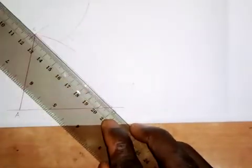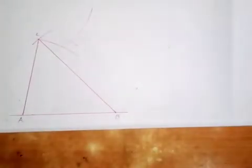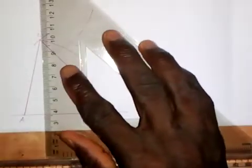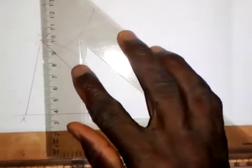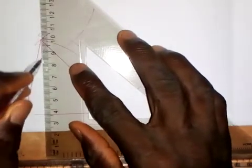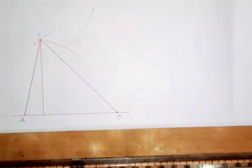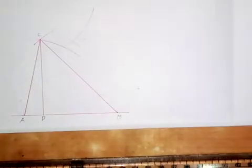The next step is to draw a perpendicular line to AB. Using my set square, I bring it to point C and draw a vertical line perpendicular to AB. The foot of this perpendicular on AB is point D.